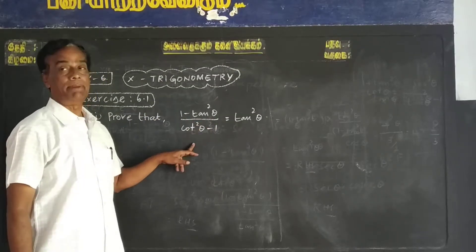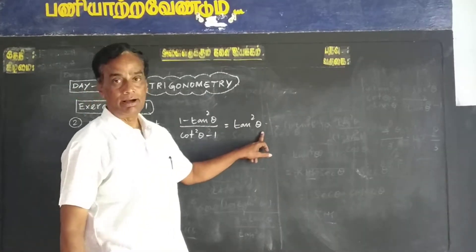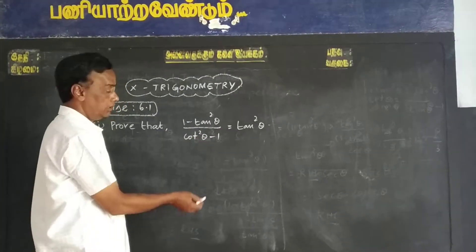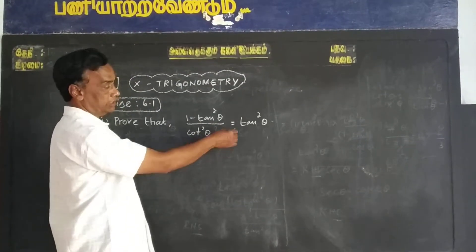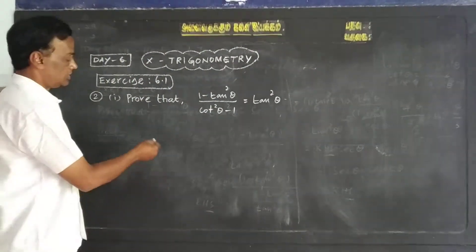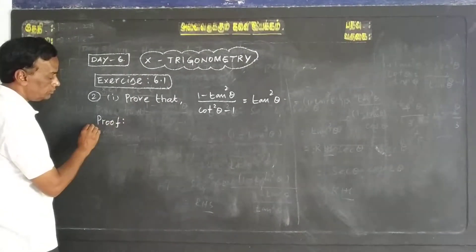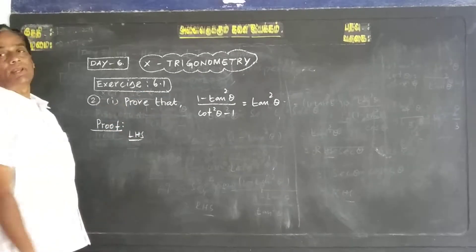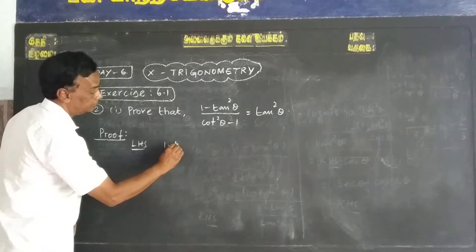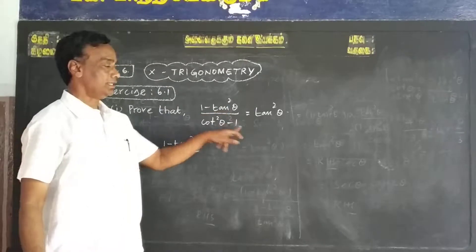1 minus tan squared theta by cot squared theta minus 1 equals tan squared theta. Left hand side — LHS: left hand side gives us 1 minus tan squared theta by cot squared theta minus 1.